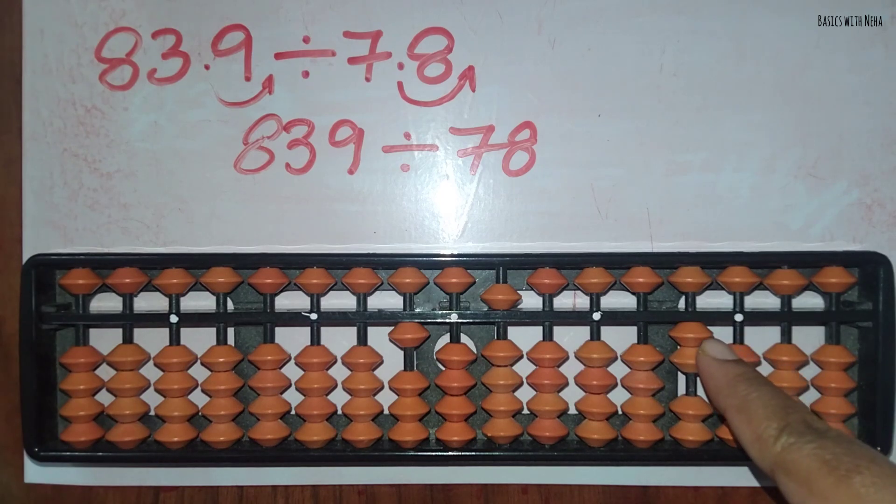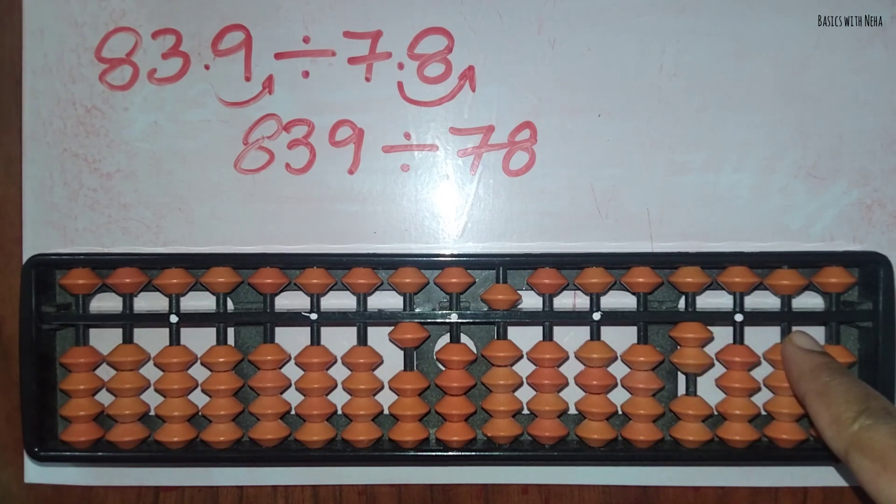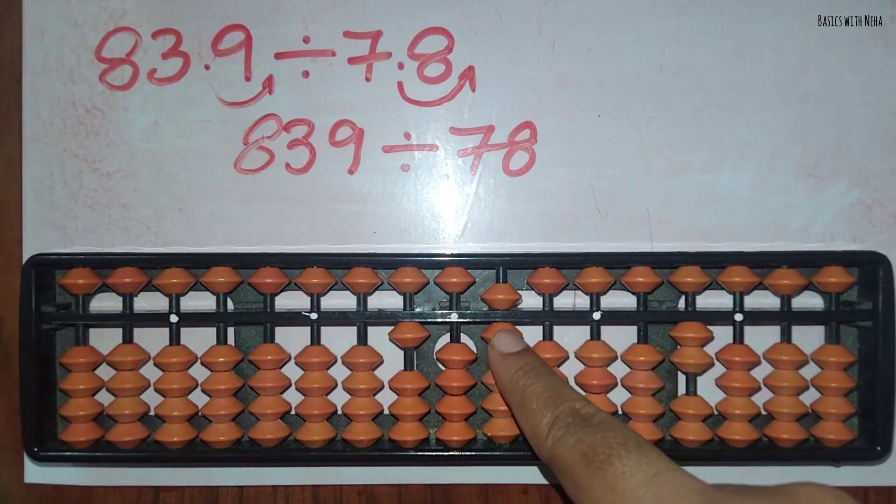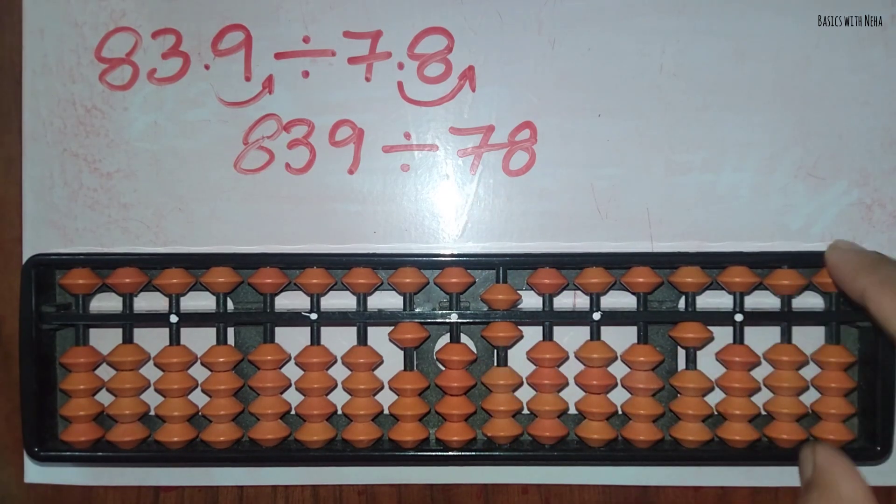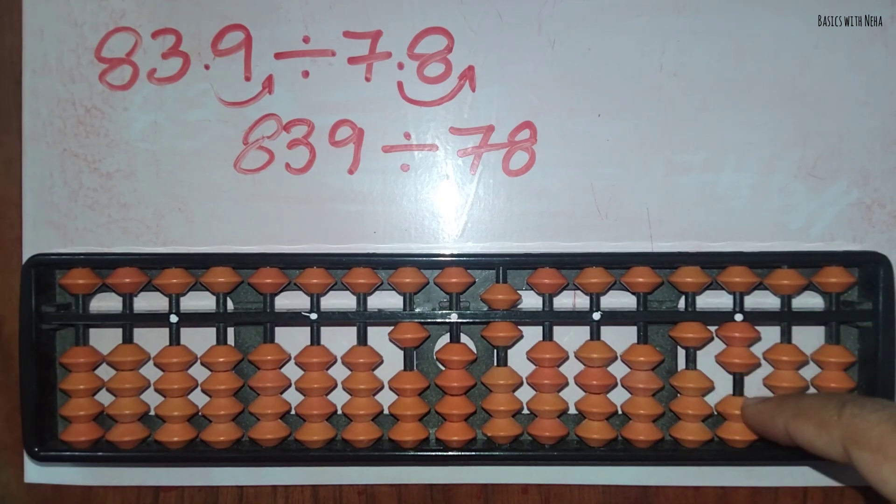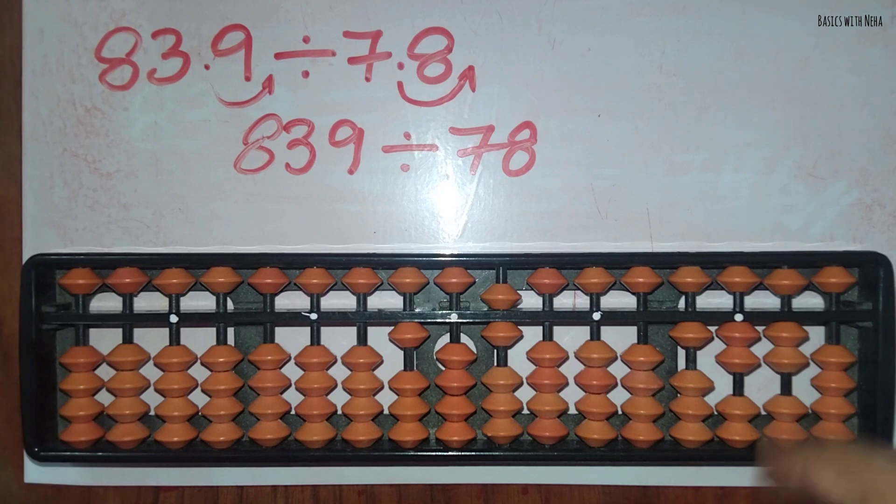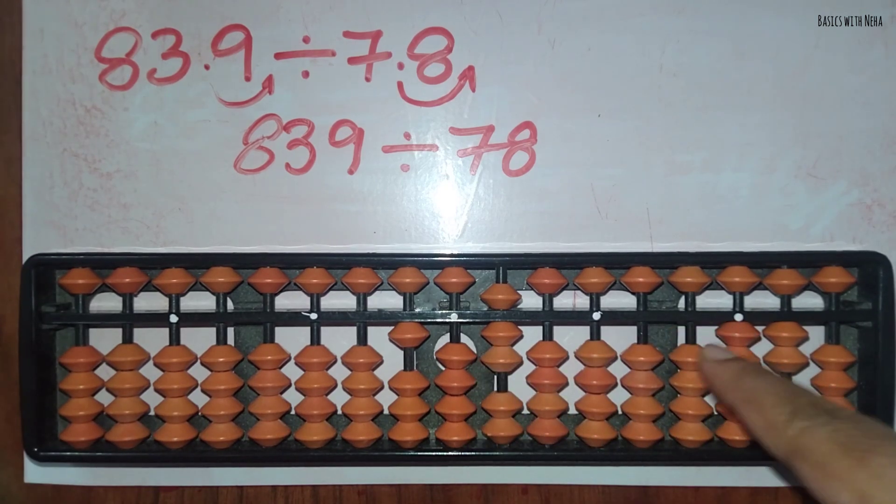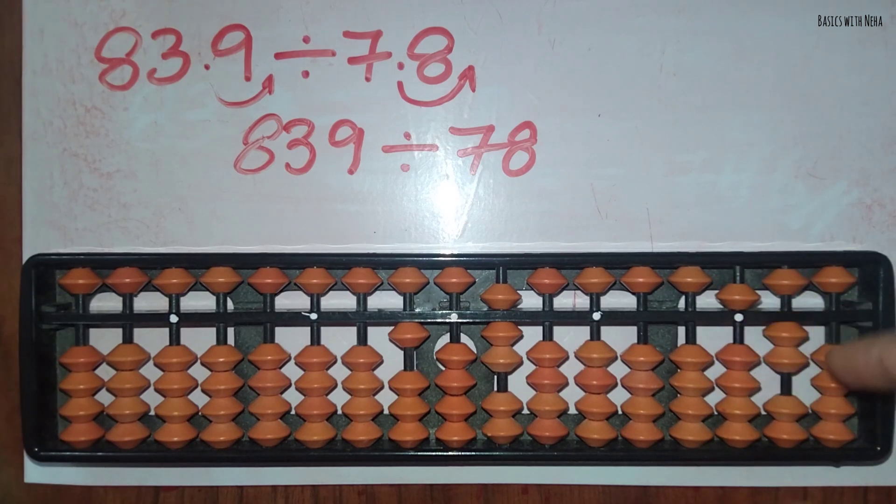Now we have 200, so we can divide again. 78 ones are 78. Minus 78. Now again we can take 78 ones are 78.